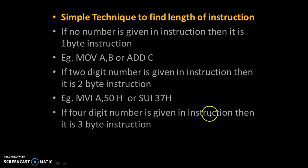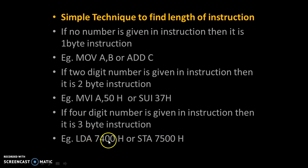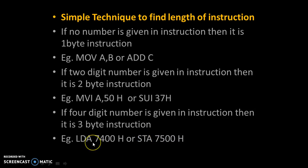If a 4-digit number is given in the instruction, then it is a 3-byte instruction. For example, LDA 7400H or STA 7500H. Here 7400 is a 4-digit number and 7500 is a 4-digit number, so we can say that LDA 7400H and STA 7500H are both 3-byte instructions.